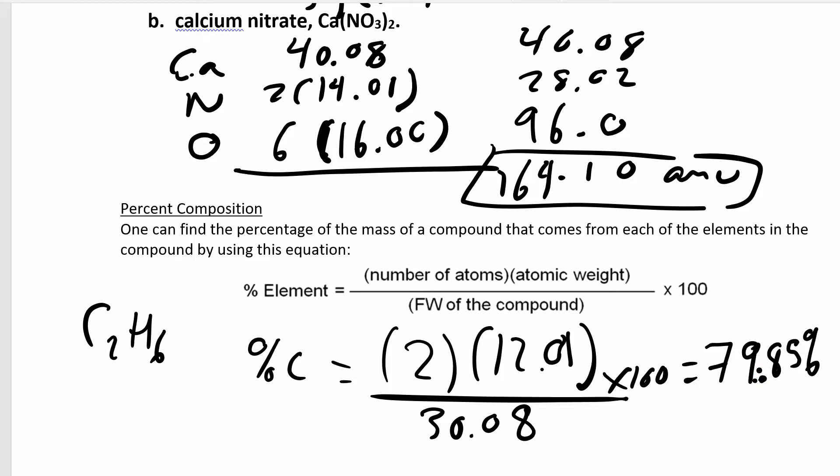Almost 80% of the mass of ethane is due to carbon, which makes sense because carbon weighs a lot more than hydrogen. Even though you have more hydrogen atoms, they don't weigh that much, so most of the mass is due to the carbon.